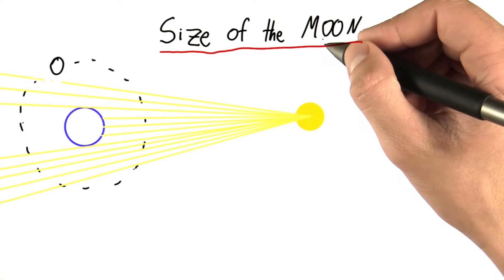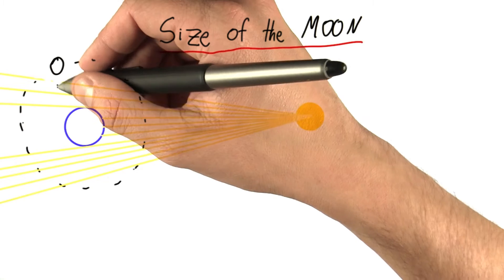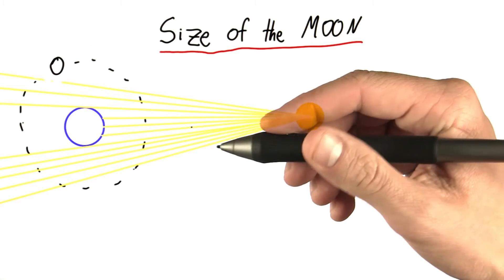So, the idea behind measuring the size of the moon is we can exploit the fact that lunar eclipses occur. Now, what's a lunar eclipse?